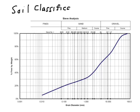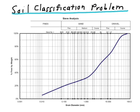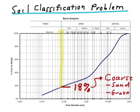The first step to the classification process is to determine whether or not we have a coarse-grain or a fine-grain soil. To do this, we examine the percent of soil passing the number 200 sieve, which is the dividing line between coarse and fine-grain soils. In this case, we have 18% of the soil passing the number 200 sieve. So clearly, this is a coarse-grain soil, which means it's either a sand or a gravel.